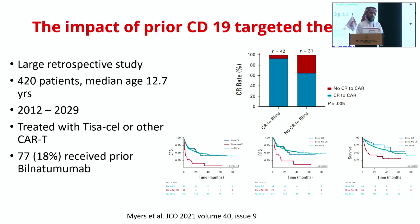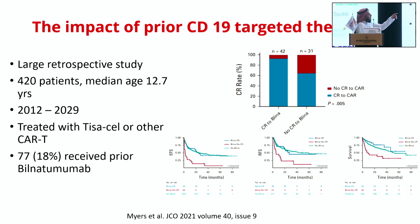The impact of prior CD19-targeted therapy, such as blinatumomab exposure before CAR-T, is also relevant. In a large retrospective study of 420 patients with median age 12.7 treated with TISA-cell or other CAR-T — 18% received prior blinatumomab — the CR rate was lower in patients who did not achieve CR with prior blinatumomab. Event-free survival, relapse-free survival, and overall survival were also lower in the group that did not respond to prior blinatumomab.